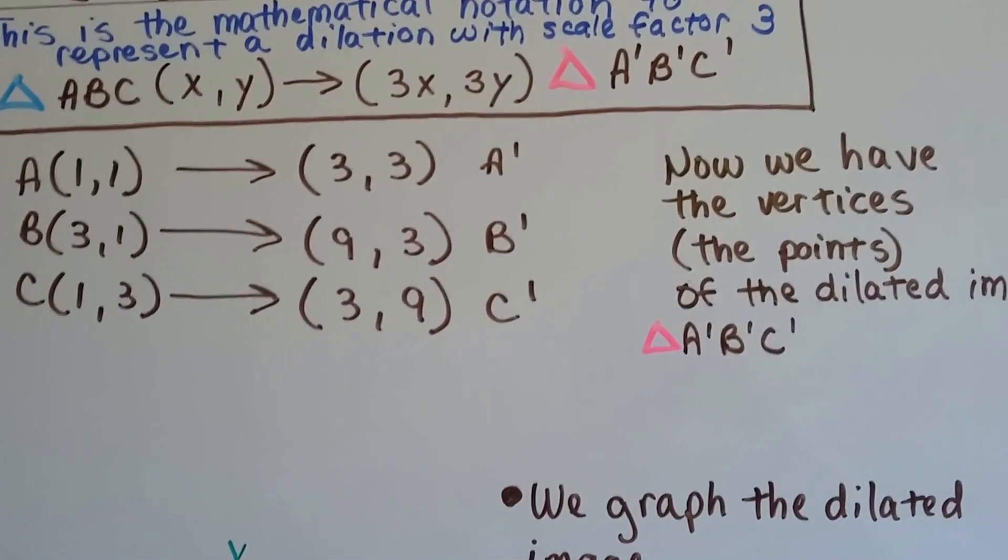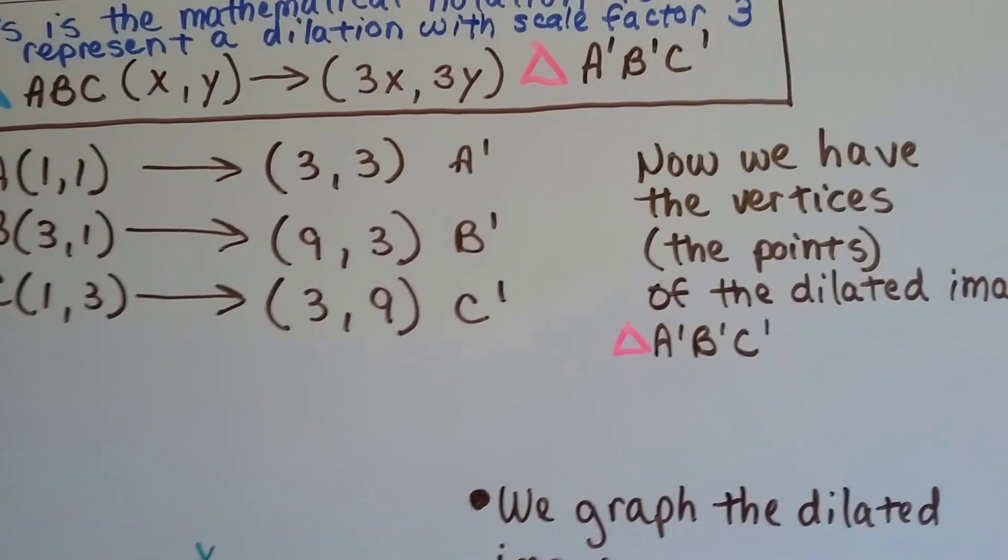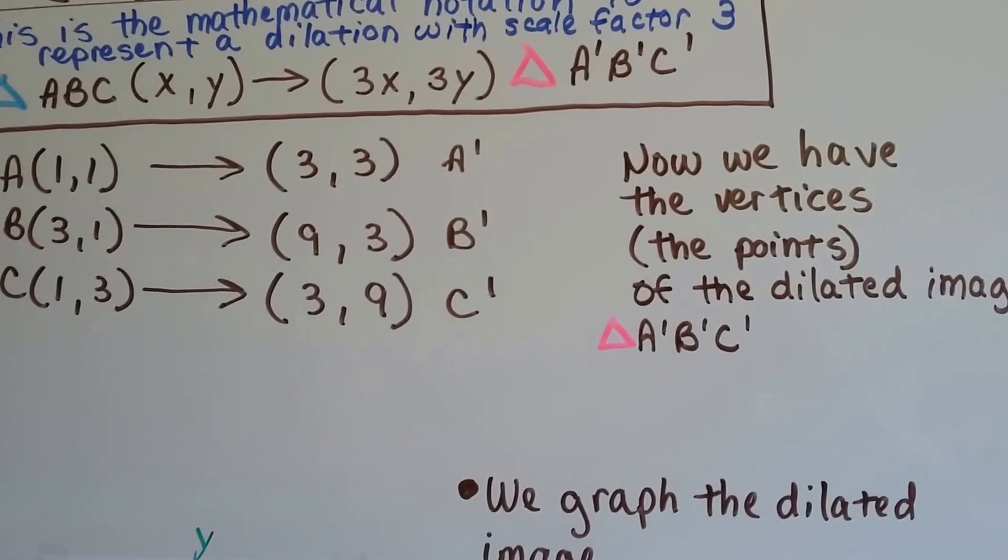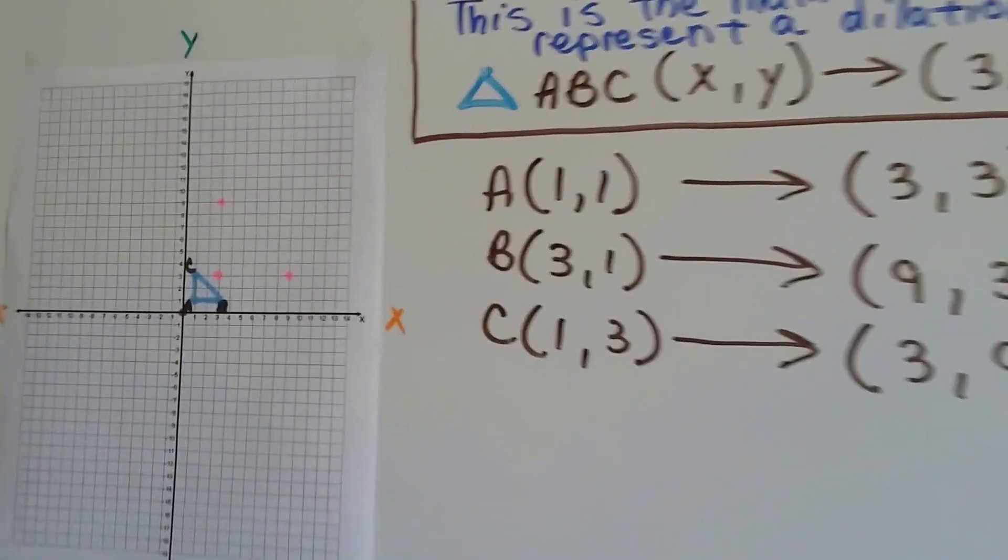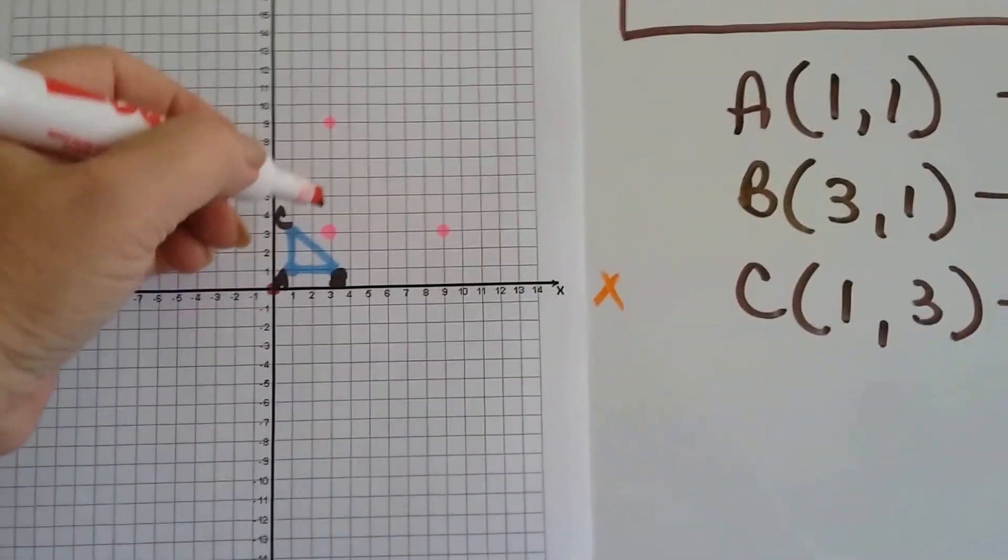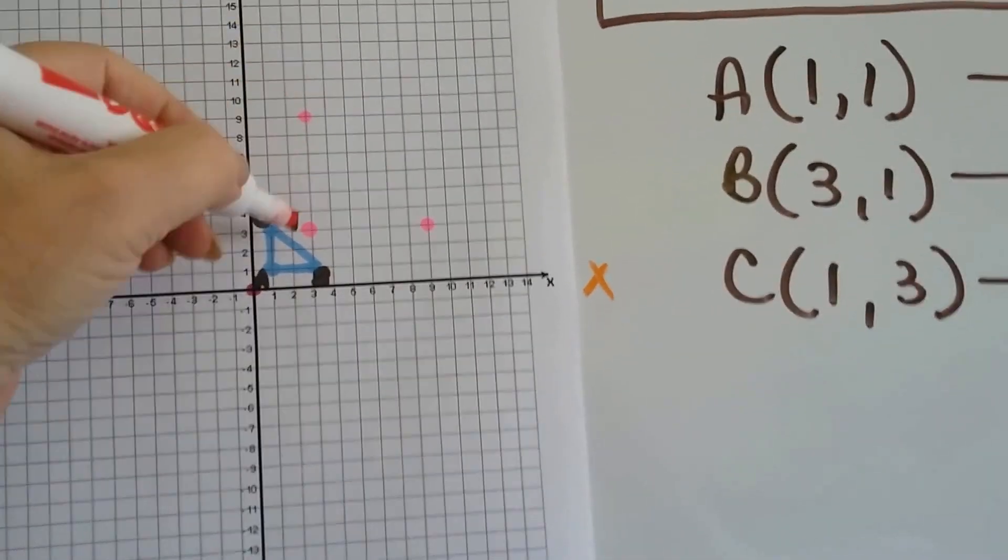Now we have A prime, B prime, C prime, and the x and y coordinates for it. We have the vertices, the points of the dilated image, and we plot them in their spot. We put them where they belong.